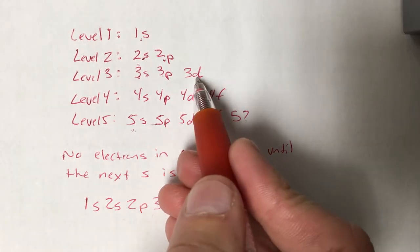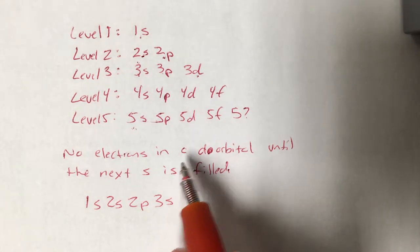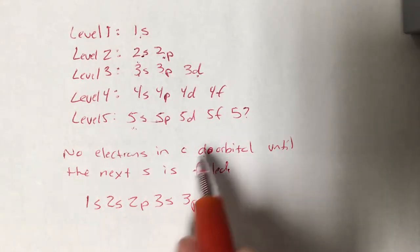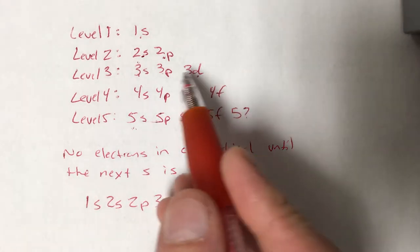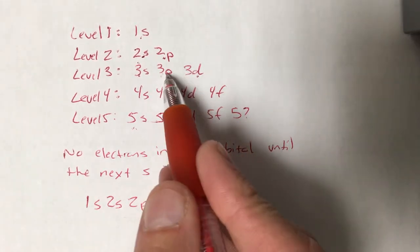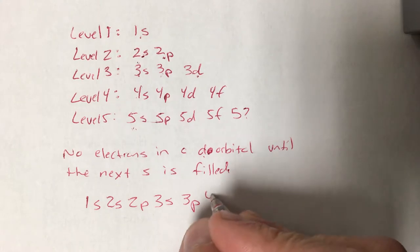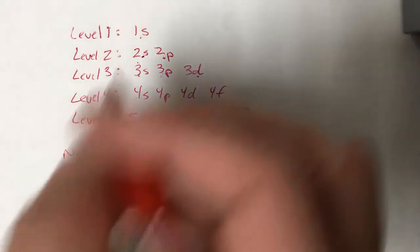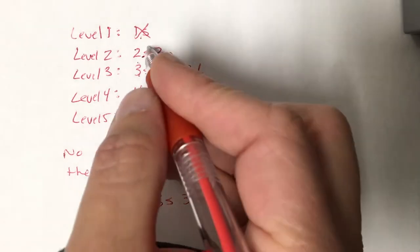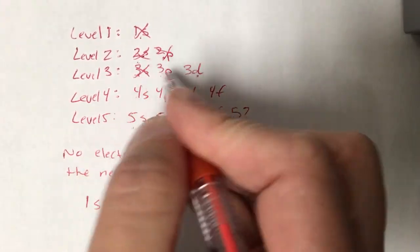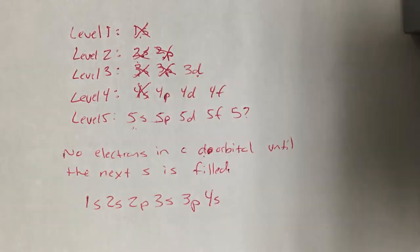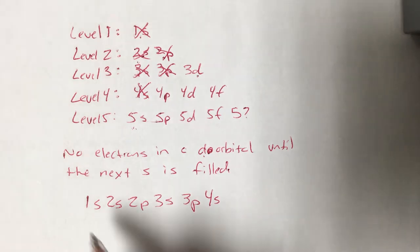And this is where we run into a d. And again, the rule is no electrons in a d orbital until the next s orbital is filled. So we don't jump from here to here, we jump from there to there. And we put the electrons in 4s. So we've taken care of that. That, that, that, that, that, and that at this point. Those are all written down here in my order.